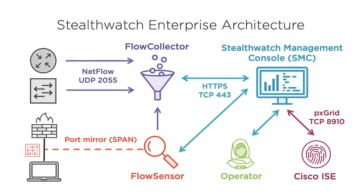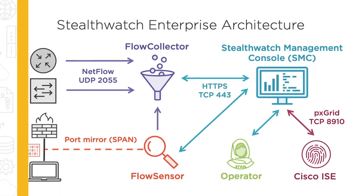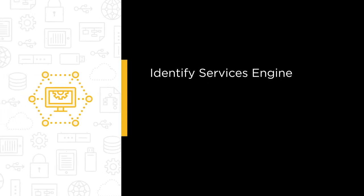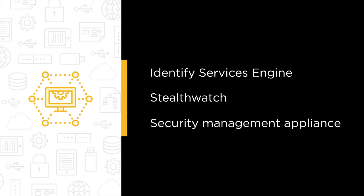Specifically, we'll cover three broad Cisco product categories: Identity Services Engine or ISE to centrally control network access, StealthWatch — a collection of products that passively monitor network flows, and SMA or Security Management Appliance used to manage web and email specific security solutions.